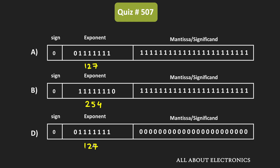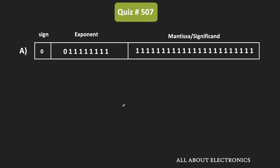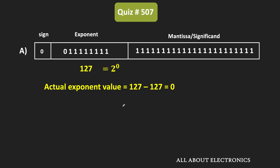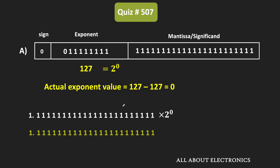For the sake of completeness, let us find the actual number represented by each 32-bit format. For option A, the biased exponent value is 127. Subtracting the bias of 127, the actual exponent value is equal to 0, or 2 to the power 0. So the actual normalized number in binary form is 1 followed by 23 ones, times 2 to the power 0.